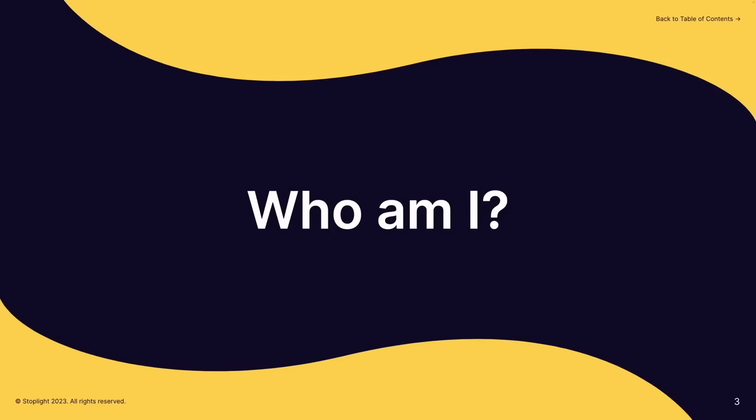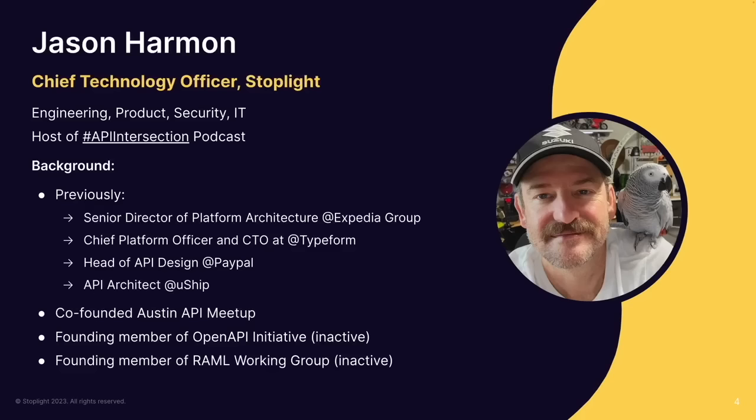My name is Jason Harmon. I'm the Chief Technology Officer at Stoplight and I oversee all the engineering, product, security, and IT. I also host a podcast called API Intersection. I've been a practitioner of building platforms and APIs at companies ranging from big public companies like PayPal and Expedia Group down to fast-growing startups like Typeform. I've always been seen as an advocate for API documentation.